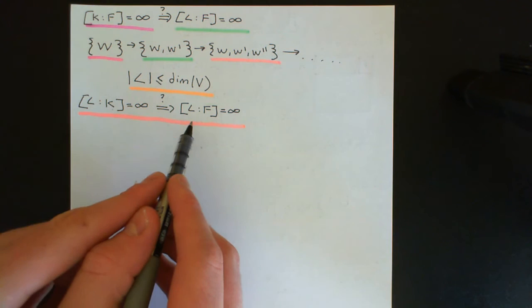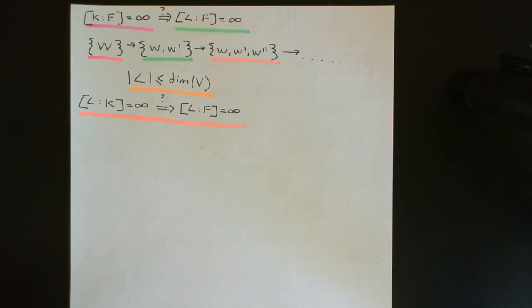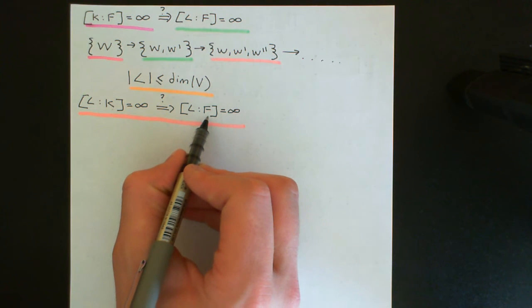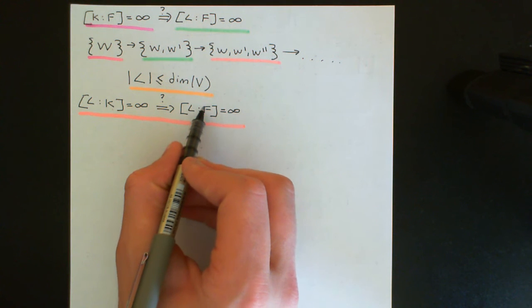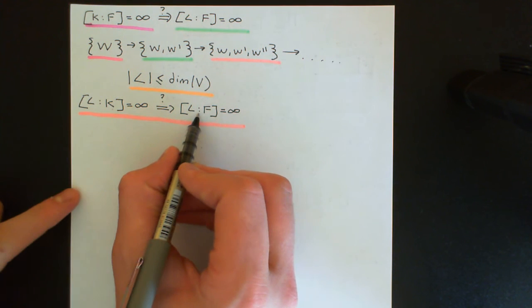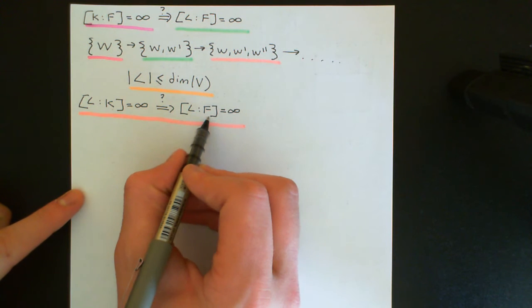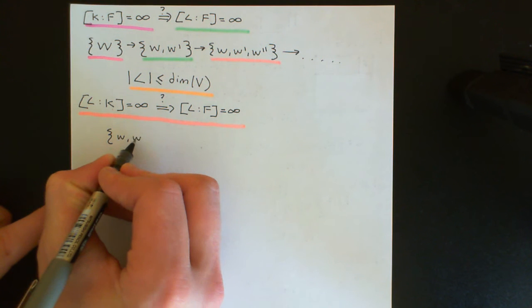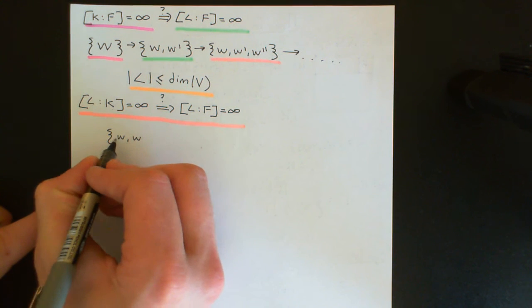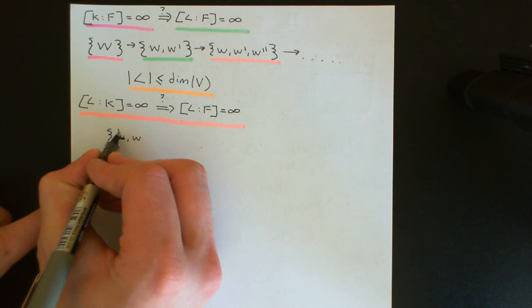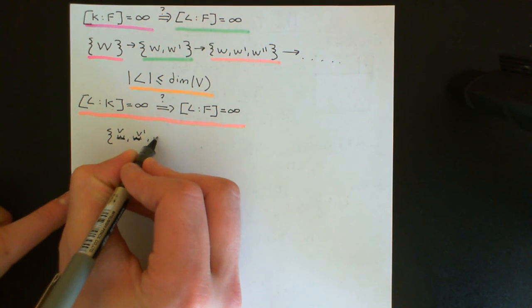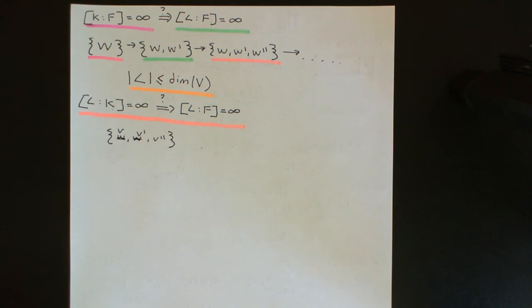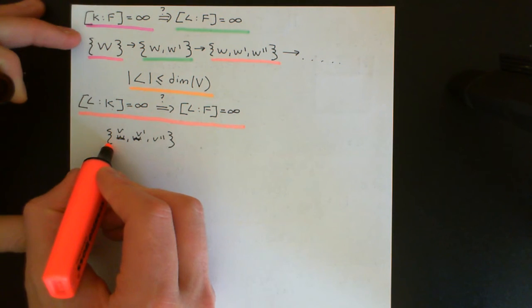These arbitrarily large linearly independent sets are still going to be linearly independent when we talk about L as a vector space over F. Let me explain this important argument. Let's say vectors V, V prime, and V double prime are linearly independent in the largest field L viewed as a vector space over K.